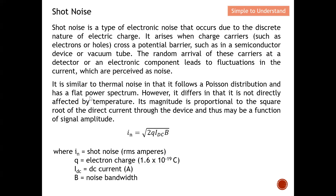Shot noise, similar to thermal noise, follows a Poisson distribution and has a flat power spectrum. This means it behaves like a DC signal and does not vary with frequency. However, it differs in that it is not directly affected by temperature. Its magnitude is proportional to the square root of the DC current through the device. The shot noise formula gives a result in RMS amperes: In = √(2qIB), where q is the electron charge (1.6 × 10⁻¹⁹ coulombs), I is the current, and B is the measurement bandwidth.